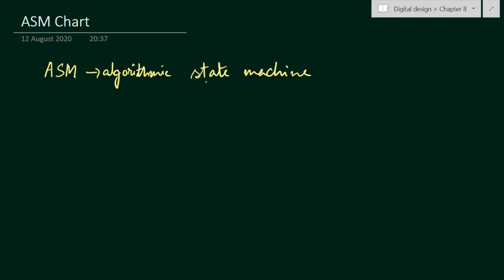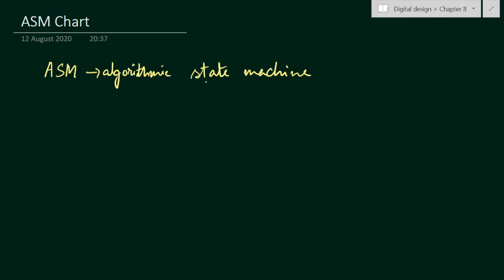Dear students, in this video we will learn about ASM chart. ASM stands for Algorithmic State Machine. The ASM chart describes the sequence of events as well as the timing relationship between the states of a sequential controller and the events that occur while going from one state to the next state. It is similar to a flow chart, with the difference that it has some timing relationship.